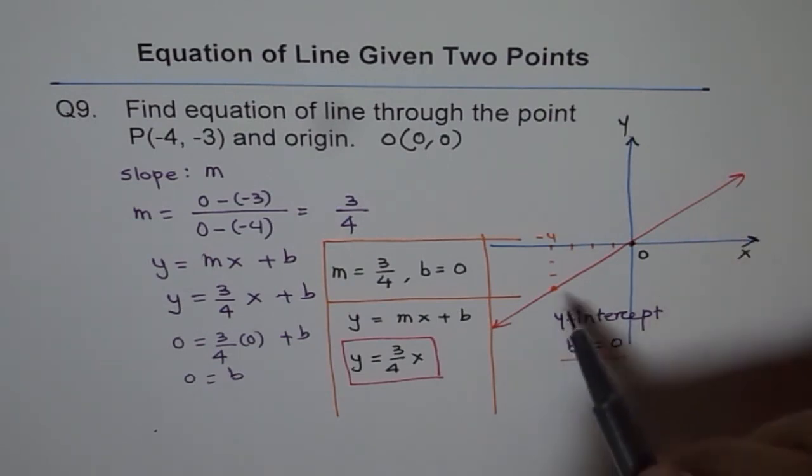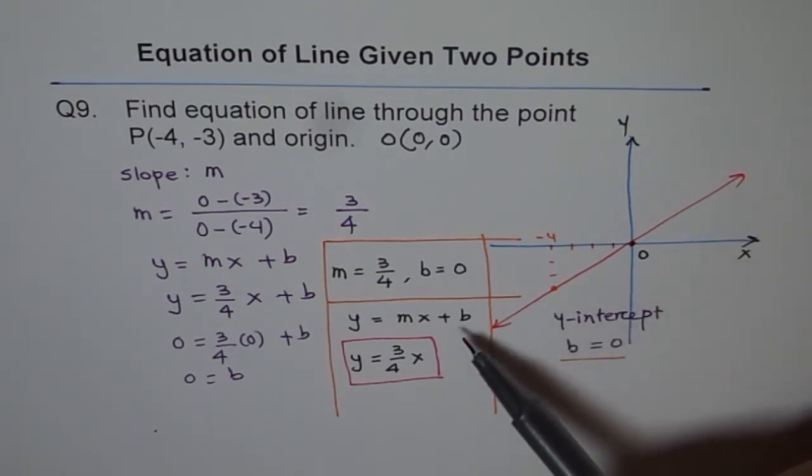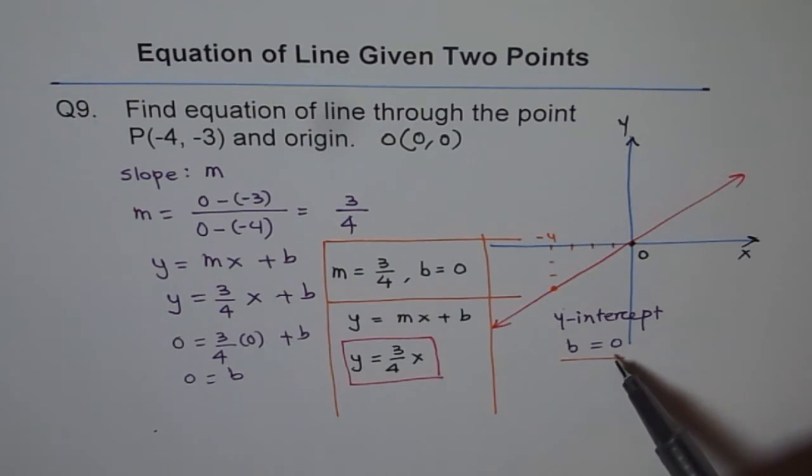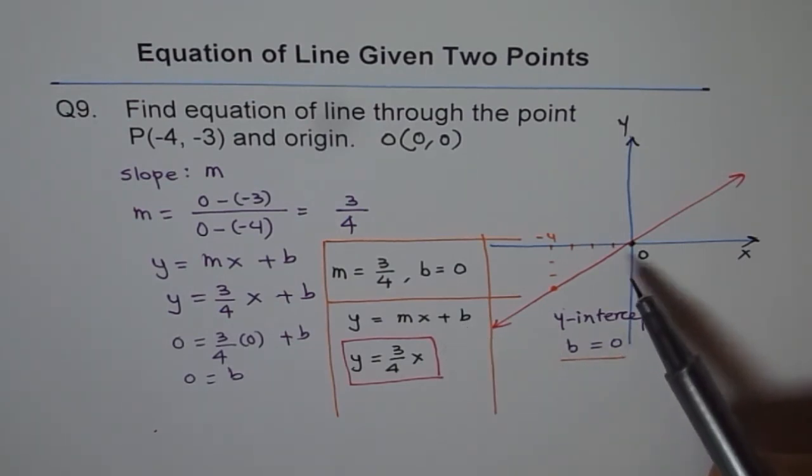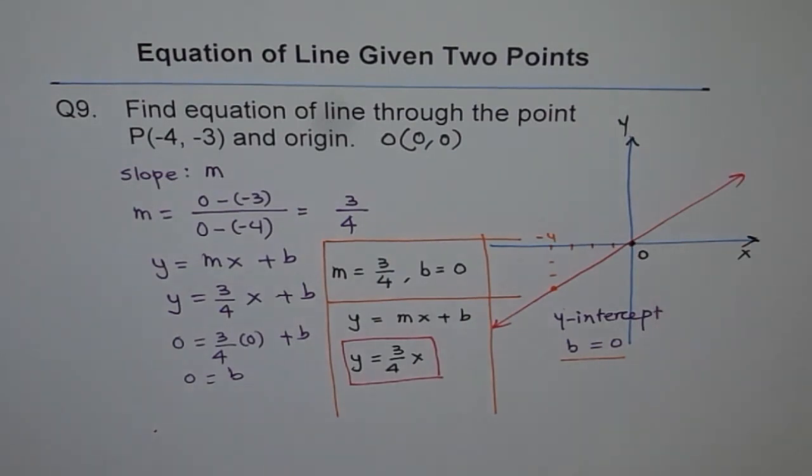Line will, straight line will go through origin and the value of B is 0. Don't say B is nothing. B is 0. That is a real value. So that's the equation for our line going through point P, (-4, -3) and origin. Thank you.